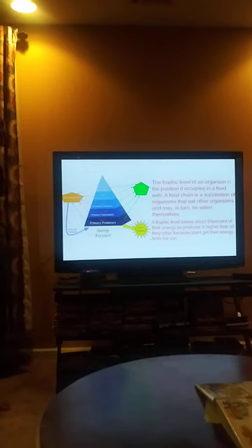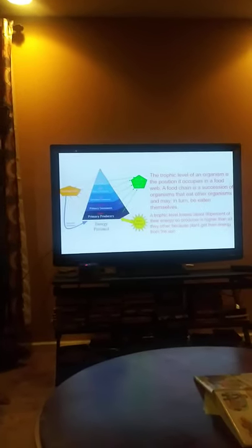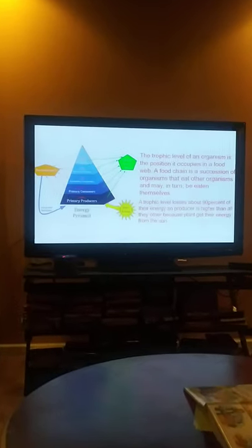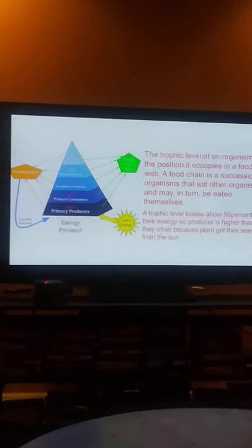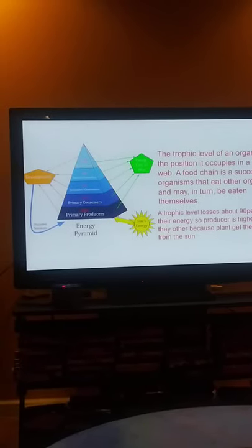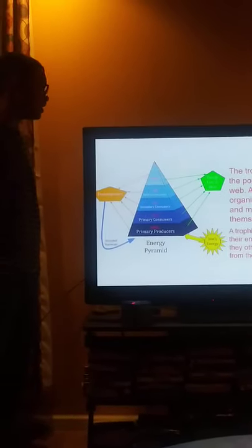A trophic level of an organism is a position it occupies in a food web. A food chain is a succession of organisms that eat other organisms and may in turn be eaten themselves.